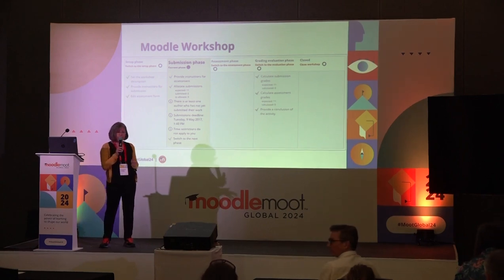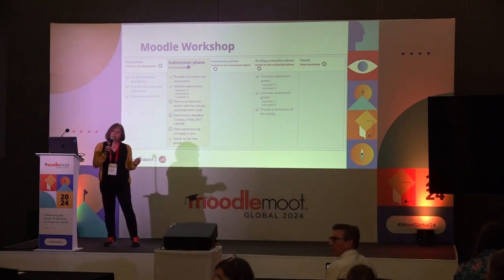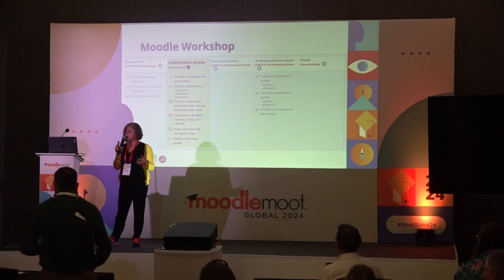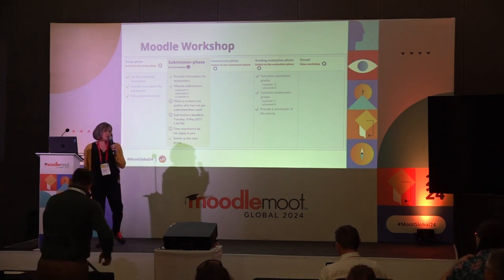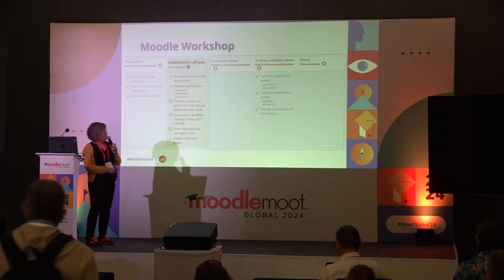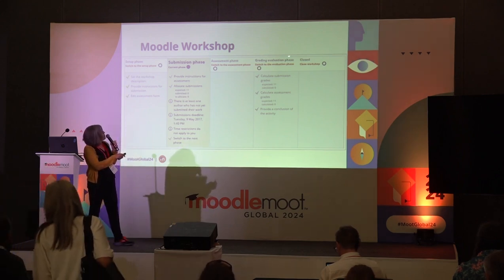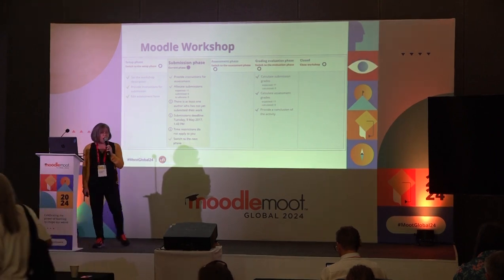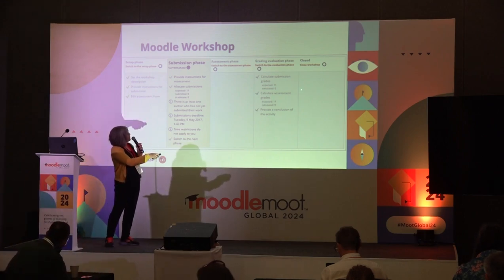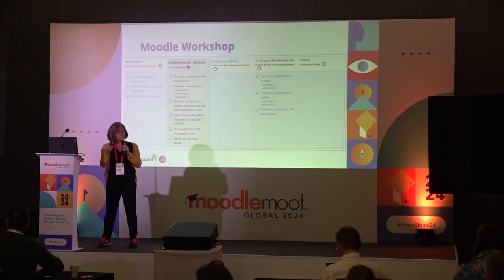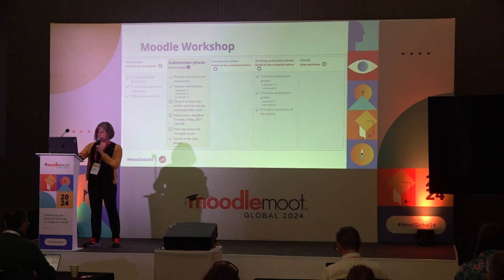It includes five phases. The setup phase where the instructor can set up everything such as the grading method, the dates, and instructions for the work to be submitted. During the submission phase, the students can submit their work on the platform. Then comes the assessment phase where each student provides feedbacks to a certain number of their peers. Then there is the grading evaluation phase during which the grades are calculated. During the closing phase, the students get two grades — one for the work, one for the review — and they can access the entire review they received from their peers.